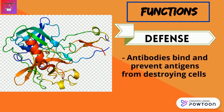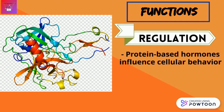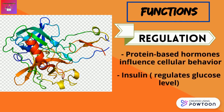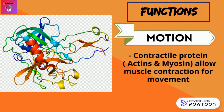Proteins also play their role in defense. Antibodies are proteins of our immune system that bind and prevent antigens from destroying our body cells. Next, protein-based hormones influence and regulate cellular behavior. For example, the hormone insulin regulates glucose level in one's blood. Last but not least, contractile proteins such as actins and myosin allow muscle contraction for movement.